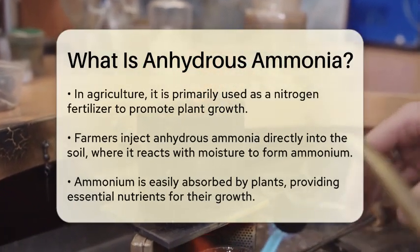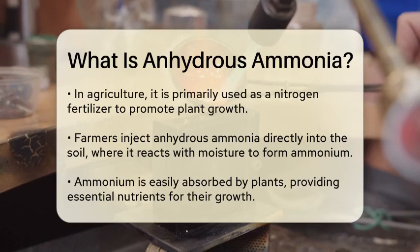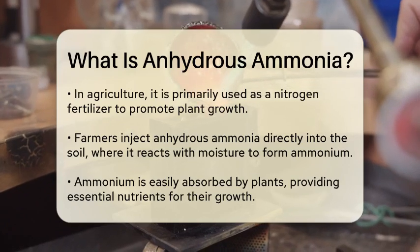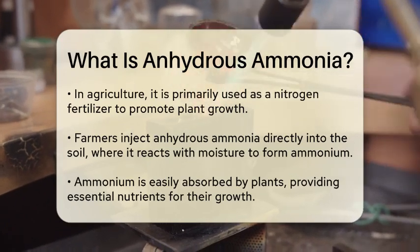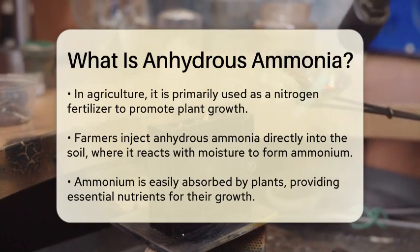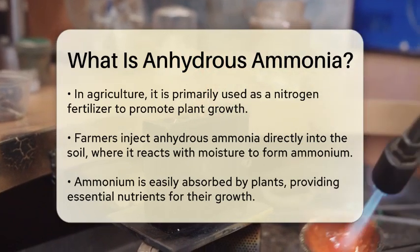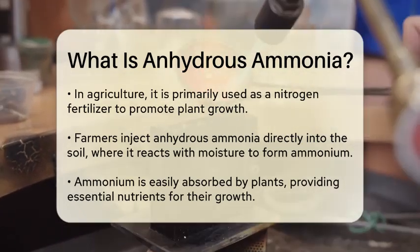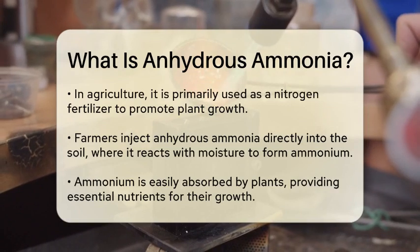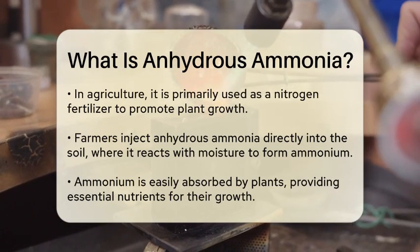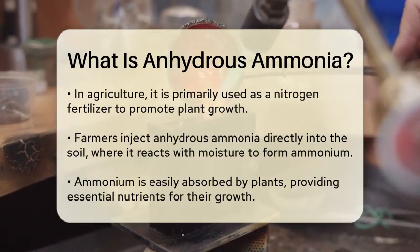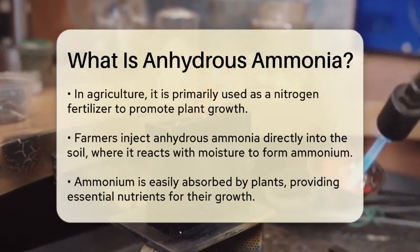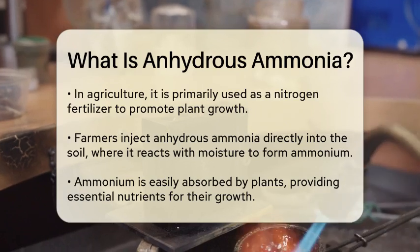In agriculture, anhydrous ammonia is primarily used as a nitrogen fertilizer. When applied to soil, it provides essential nutrients that promote plant growth. Farmers often inject it directly into the soil, where it reacts with moisture to form ammonium, which plants can readily absorb.